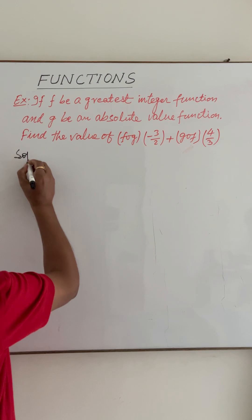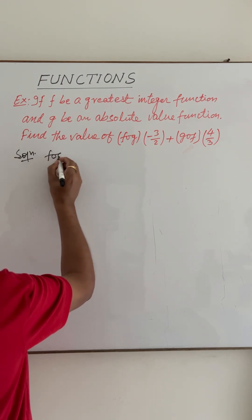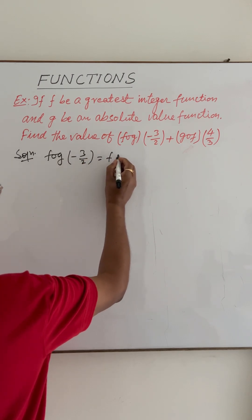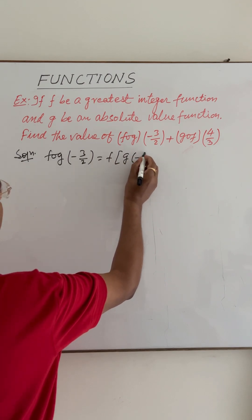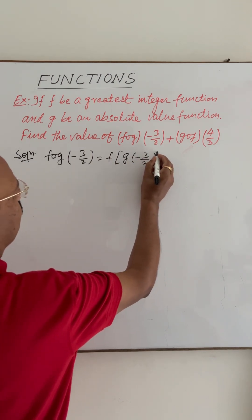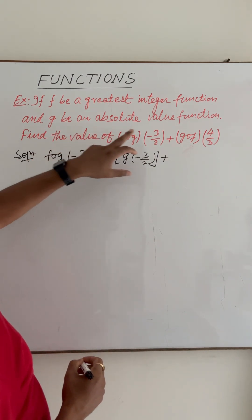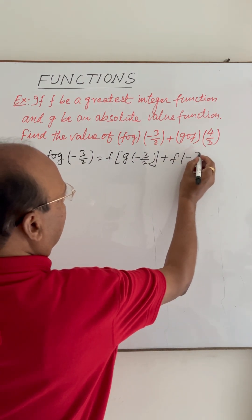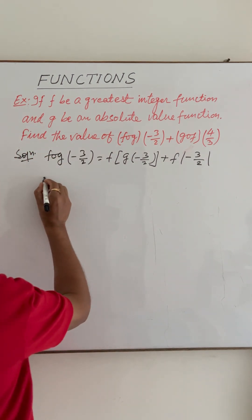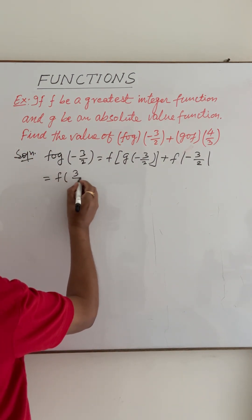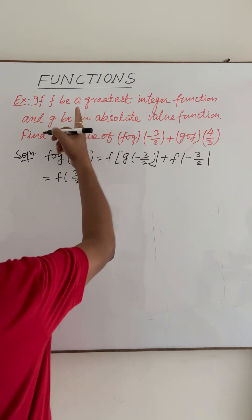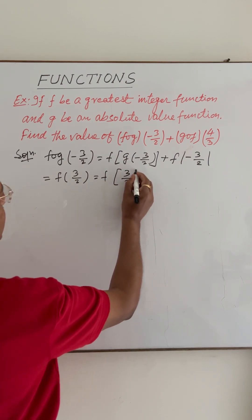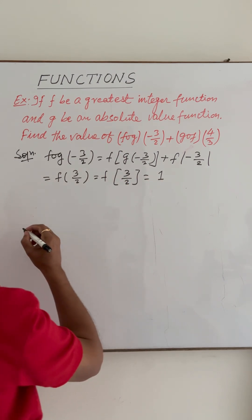For f∘g(-3/2), this can be written as f of g(-3/2). Since g is the absolute value function, this becomes f of |-3/2|, which equals f(3/2). Since f is the greatest integer function, the greatest integer value of 3/2 is 1.